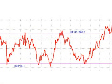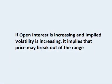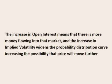Let's look at using open interest if the price of the stock or ETF is in a range. As price moves toward the edge of the range, if open interest is increasing and implied volatility is increasing, it implies that price may break out of the range. An increase in open interest means that there is an increase in contracts for that particular stock or ETF, which means that there is more money flowing into that market. An increase in implied volatility means that the market is stating that there is an increased chance that price will move further from its current location.